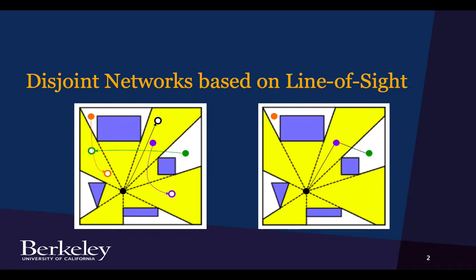The setting for this project is looking at disjoint networks between agents that occur because agents only have line of sight communication capabilities.